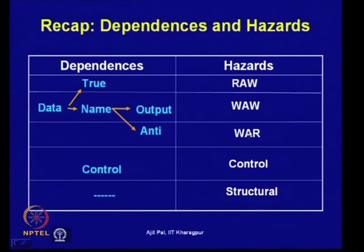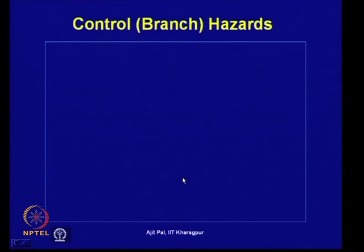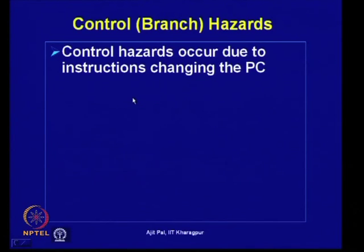So far we have concentrated on data dependences and overcoming the hazards arising from them. Now we shall focus on control dependences. We have seen that control dependences lead to control hazards. In simple terms, control hazards occur due to instructions changing the program counter, which keeps track of the instruction to be executed next — that is, the address of the next instruction.